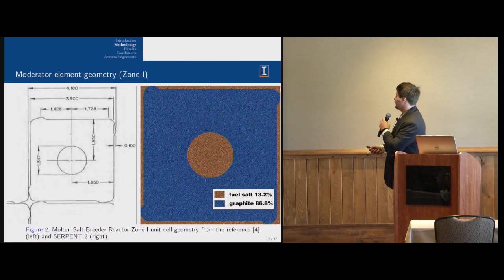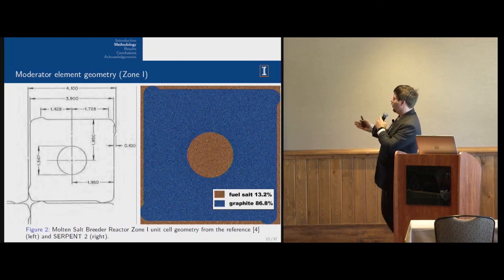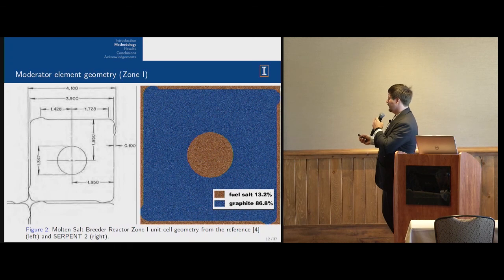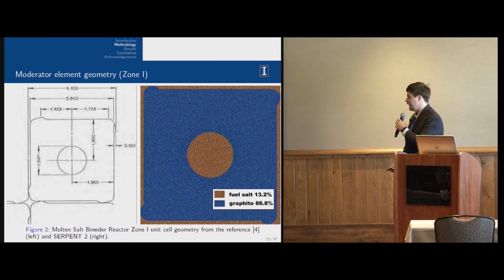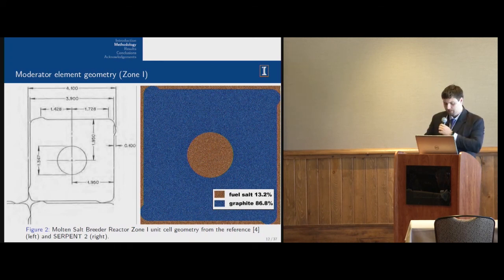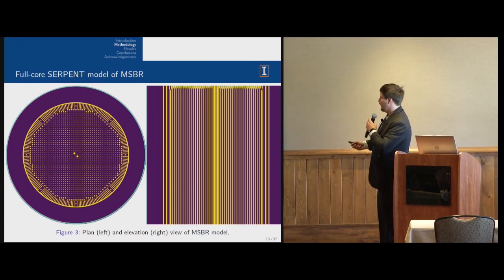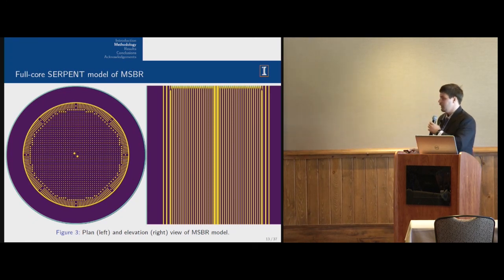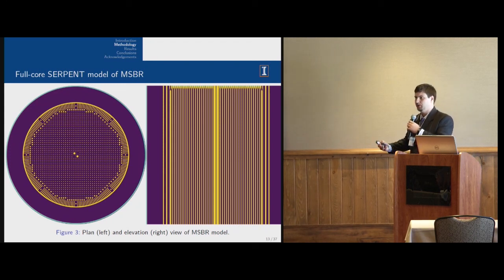There is a neutronics model of molten salt breeder reactor. The yellow part is fuel salt and blue is our moderator, which is graphite in this case. As you can see, the geometry is quite irregular, especially with these corners. The full core is even more irregular. We have one type of cell here, another type here, and a different type here. It's impossible to simulate these reactors just using some simplified geometry like a unit cell. We have to do the full core model. That's why we actually need Blue Waters.